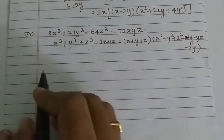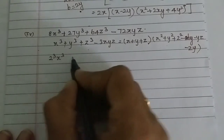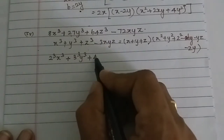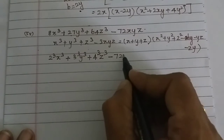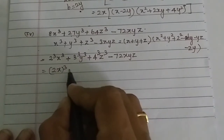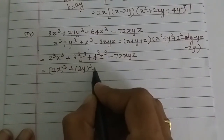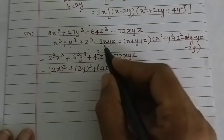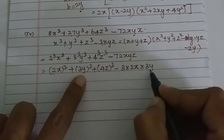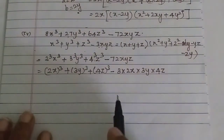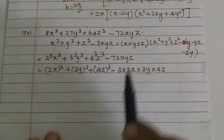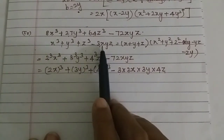Now: 8 = 2³ so the first term is (2x)³. Then 27 = 3³ so the second term is (3y)³. And 64 = 4³ so the third term is (4z)³. Check: 3 × 2x × 3y × 4z = 3 × 2 × 3 × 4 × xyz = 72xyz. Perfect - the formula x³+y³+z³-3xyz applies with x→2x, y→3y, z→4z.